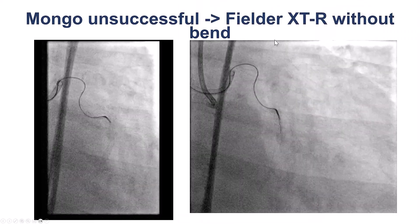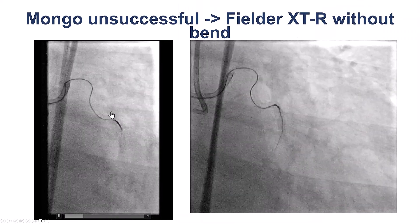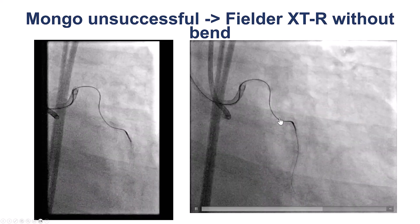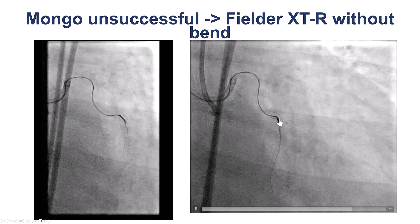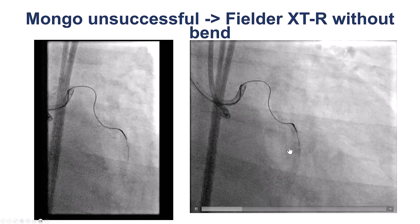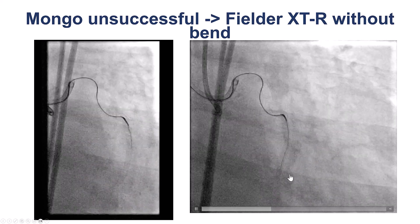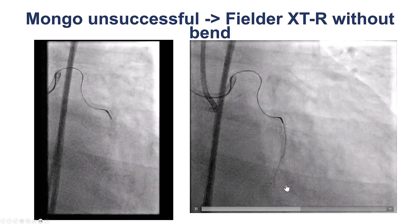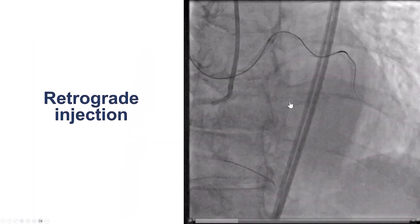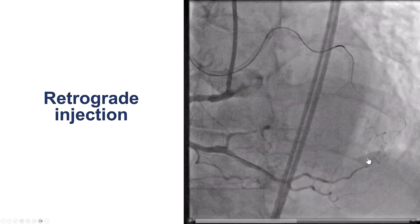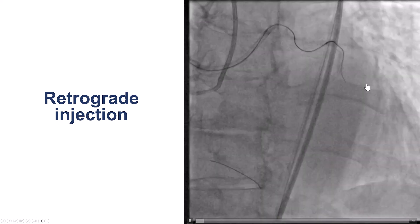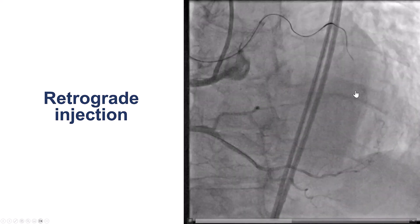However, when we then took a polymer-jacketed wire — the Mongo didn't go, but a Fielder XTR, which is a soft tapered polymer-jacketed guidewire — it nicely tracked along the previously placed circumflex stents and seemed to enter into the second obtuse marginal branch. On the contralateral injection, again with a lot of tortuosity, the wire appears to be in that second obtuse marginal branch.